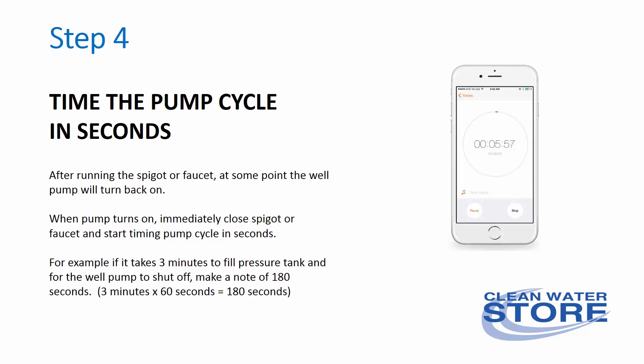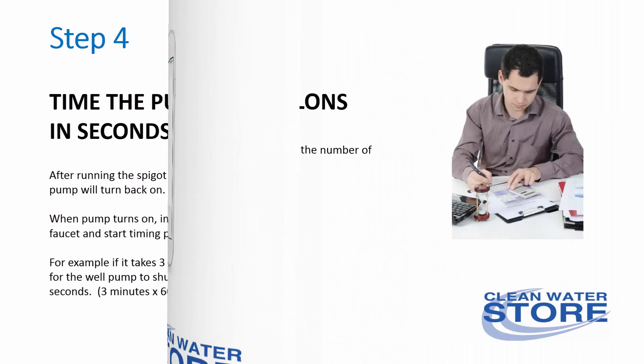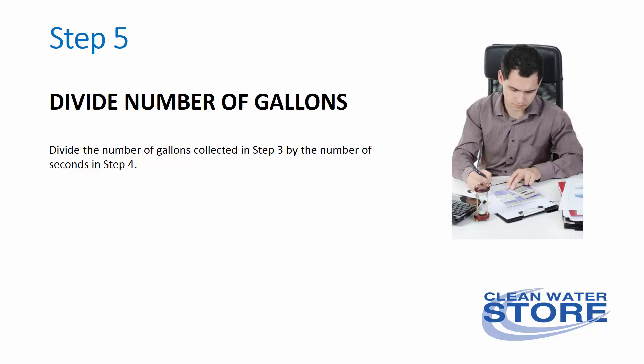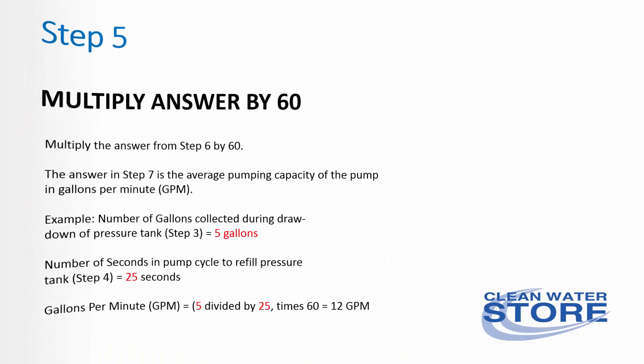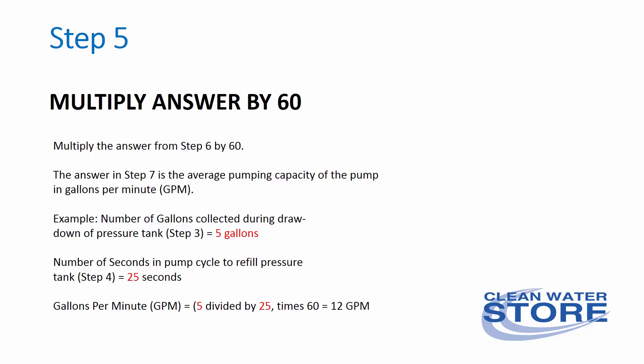For example, if it took three minutes to fill the pressure tank and for the well pump to shut off, make a note of 180 seconds. Step five: divide the number of gallons collected in step three by the number of seconds you timed in step four. Finally, multiply that answer by 60. This answer gives you the average pumping capacity of your pump in gallons per minute.